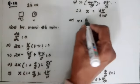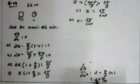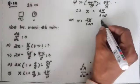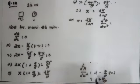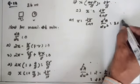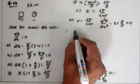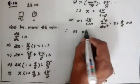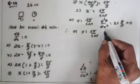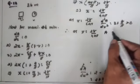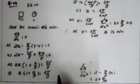At x = 28/(π + 4), the second derivative d²A/dx² = 2 + 8/π > 0. Therefore at x = 28/(π + 4), the area A is minimum.